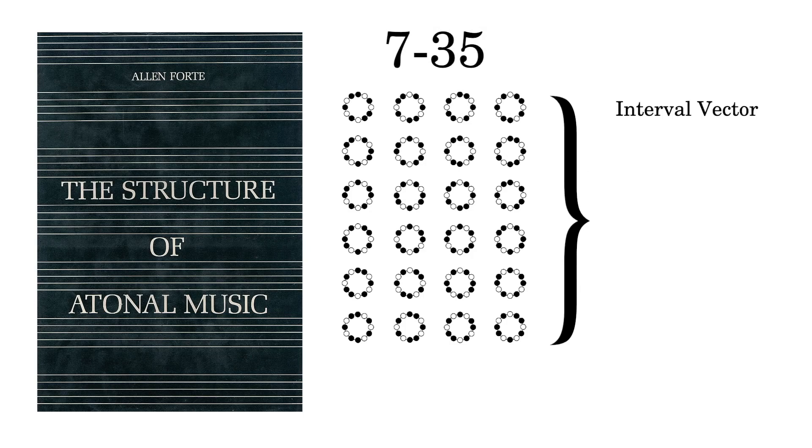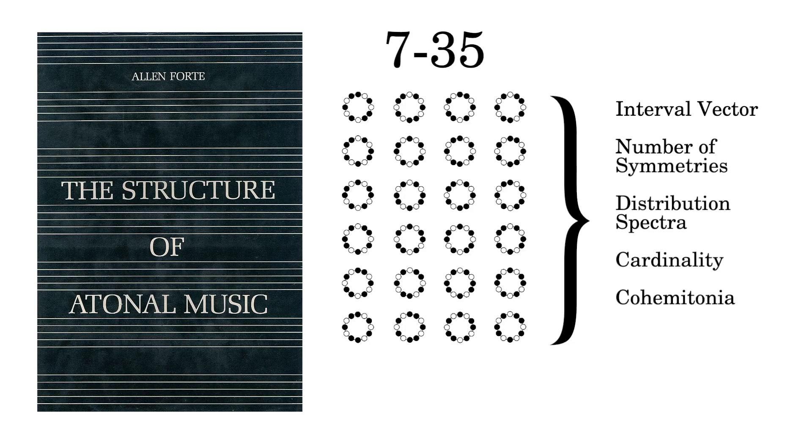It is useful to group them all together because they all have so much in common. They have the same interval vector, the same number of symmetries, the same distribution spectra, cardinality, cohemitonia, and all sorts of other properties of interest to music theorists.